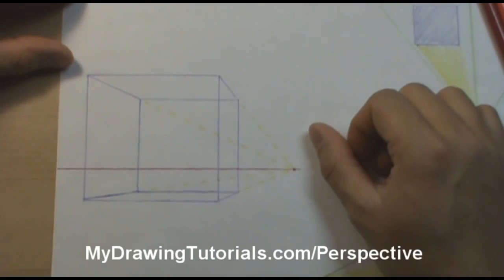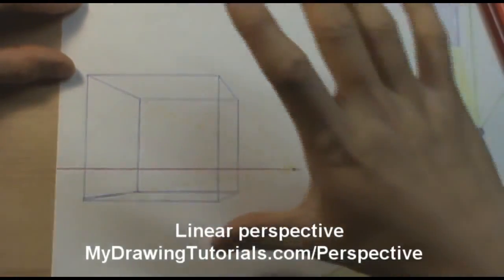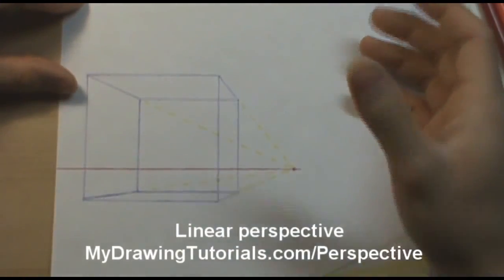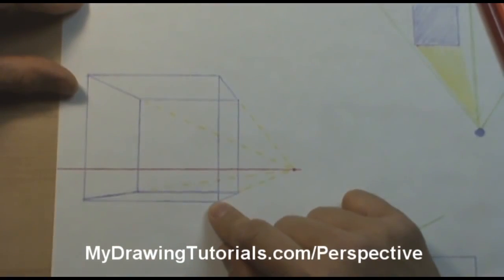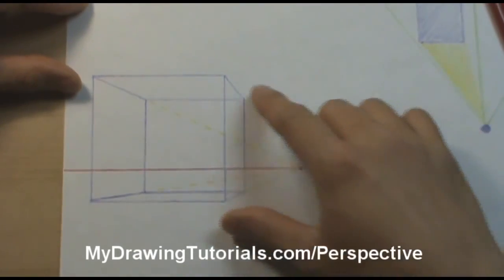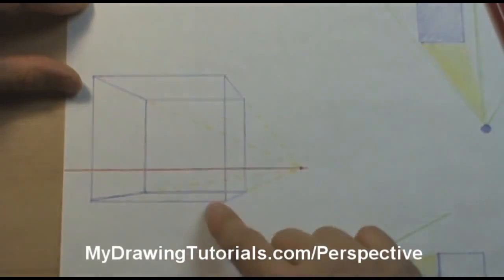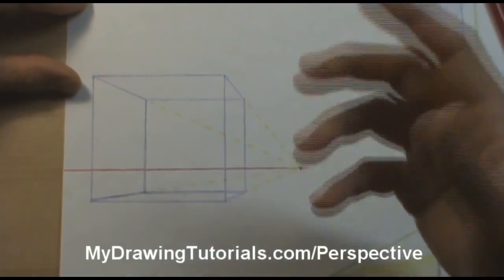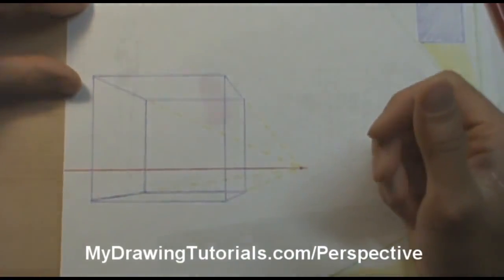And finally we have another method of achieving depth called linear perspective and that's when instead of using manipulation of color or tone, instead we use strategically placed lines to create an illusion of depth. So in this example we have a cube and by strategically placing these slanted lines here that seem to converge toward a vanishing point, we create an illusion that this shape is three-dimensional.